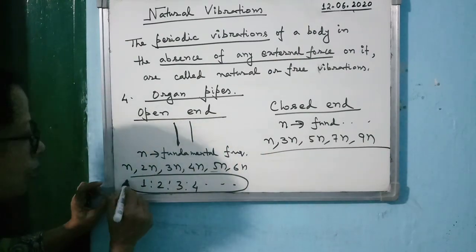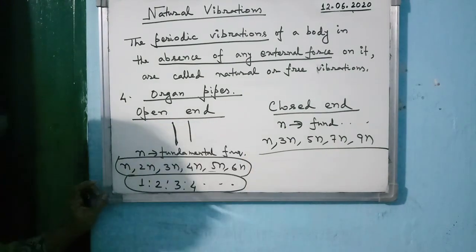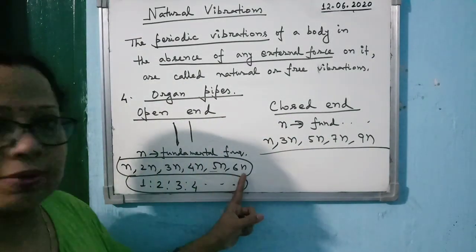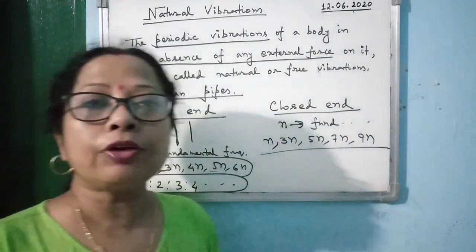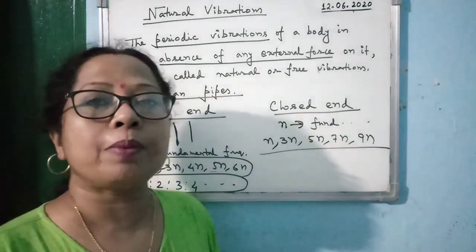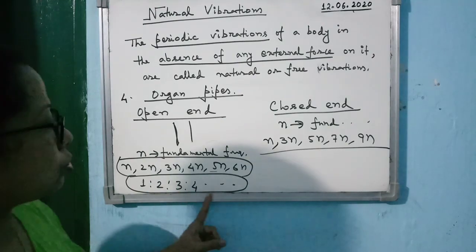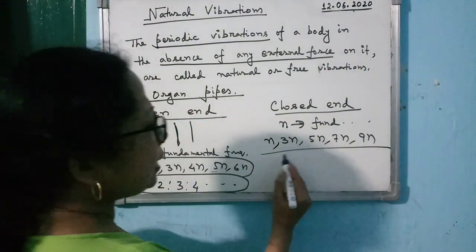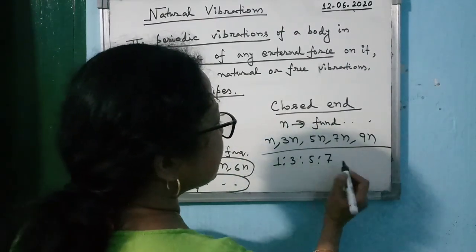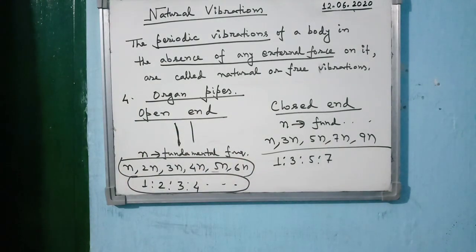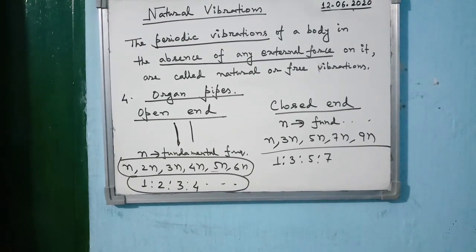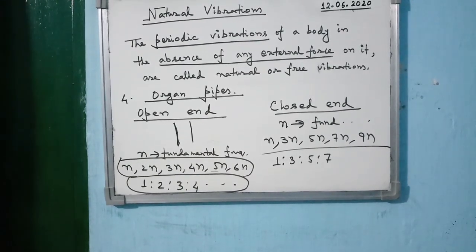This is a very important concept in physics. In an open-end organ pipe with fundamental frequency N, the other frequencies are 2N, 3N, 4N, 5N, 6N — the ratio is 1:2:3:4:5 and so on. In a closed-end organ pipe, only the odd multiples of the fundamental frequency are present — the ratio is 1:3:5:7:9 and so on.